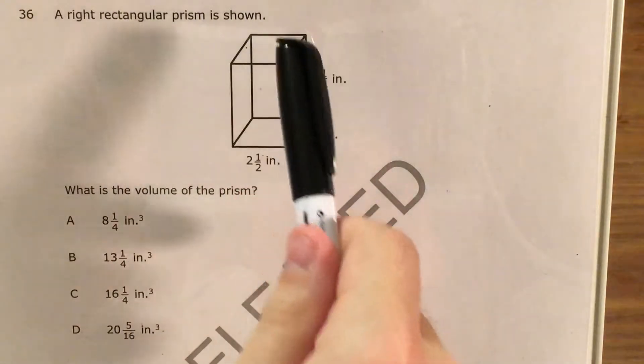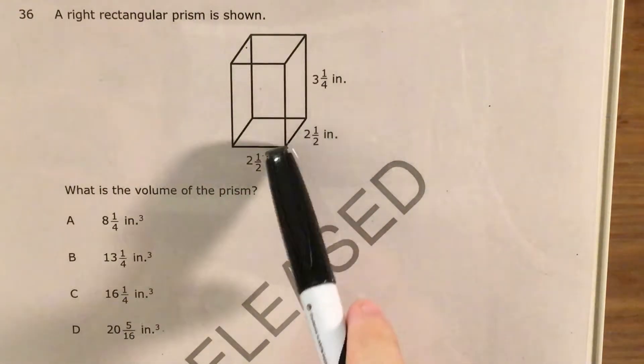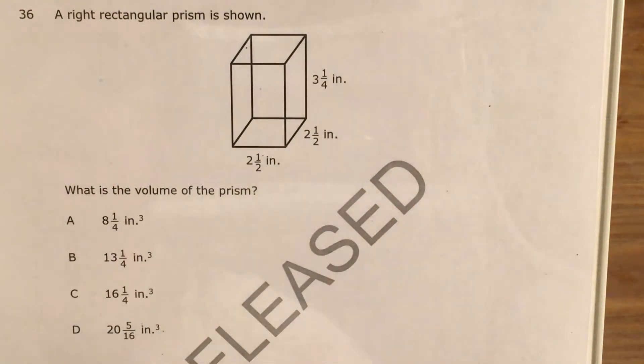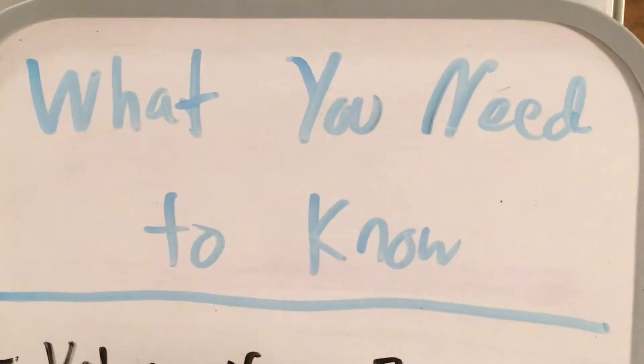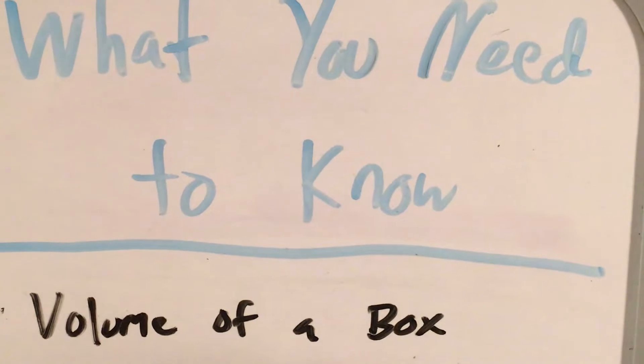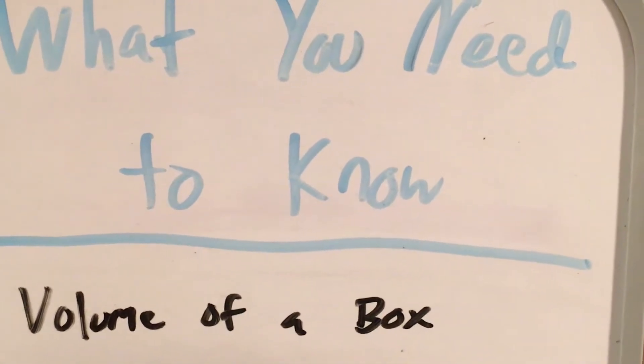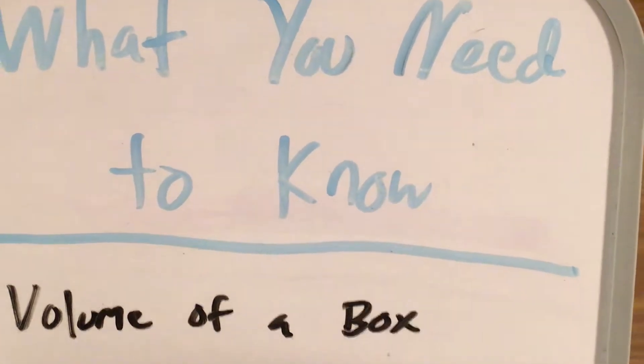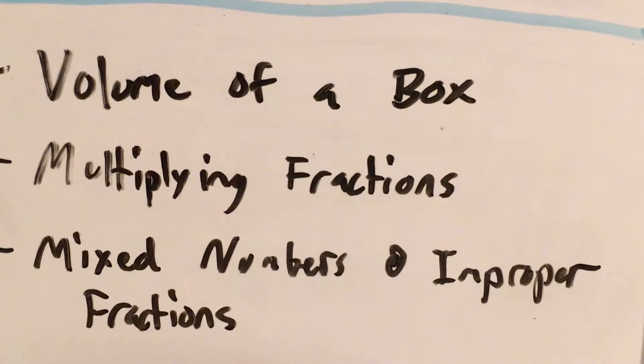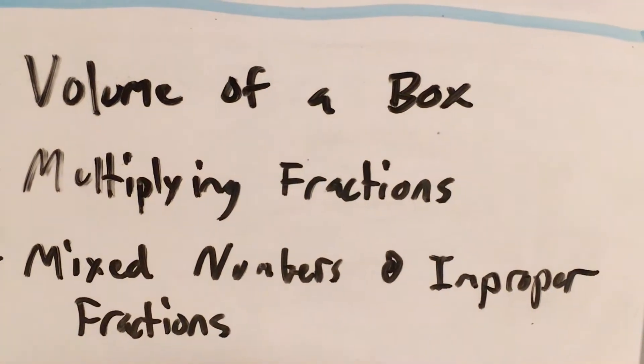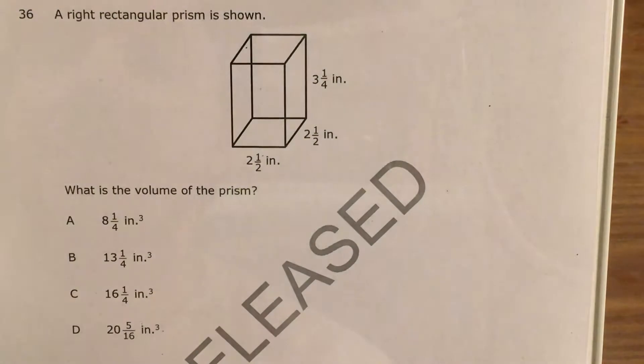The problem gives us a right rectangular prism. It gives us a length, a width, and a height for this prism, and we just need to find the volume. In order to do a question like this really well, we need to know how to find the volume of a rectangular prism or a box, how to multiply fractions, and then also what to do with mixed numbers and improper fractions.